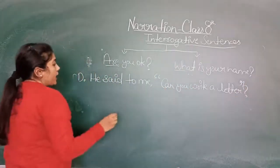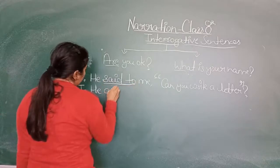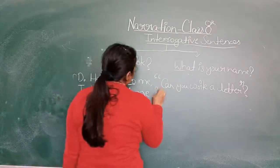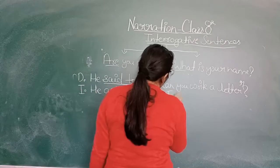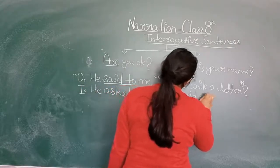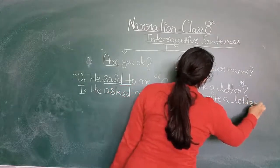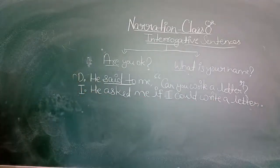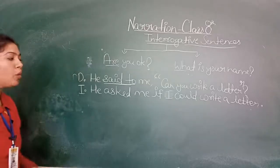Now one more example: Direct speech — 'He said to me, can you write a letter?' Indirect speech — 'said to' changes to 'asked,' inverted commas are removed, 'if' is used, and 'can' changes to 'could.' So the sentence becomes: 'He asked me if I could write a letter.' The interrogative sentence does not remain — it becomes assertive. 'Can' changes to 'could' — this is clear.